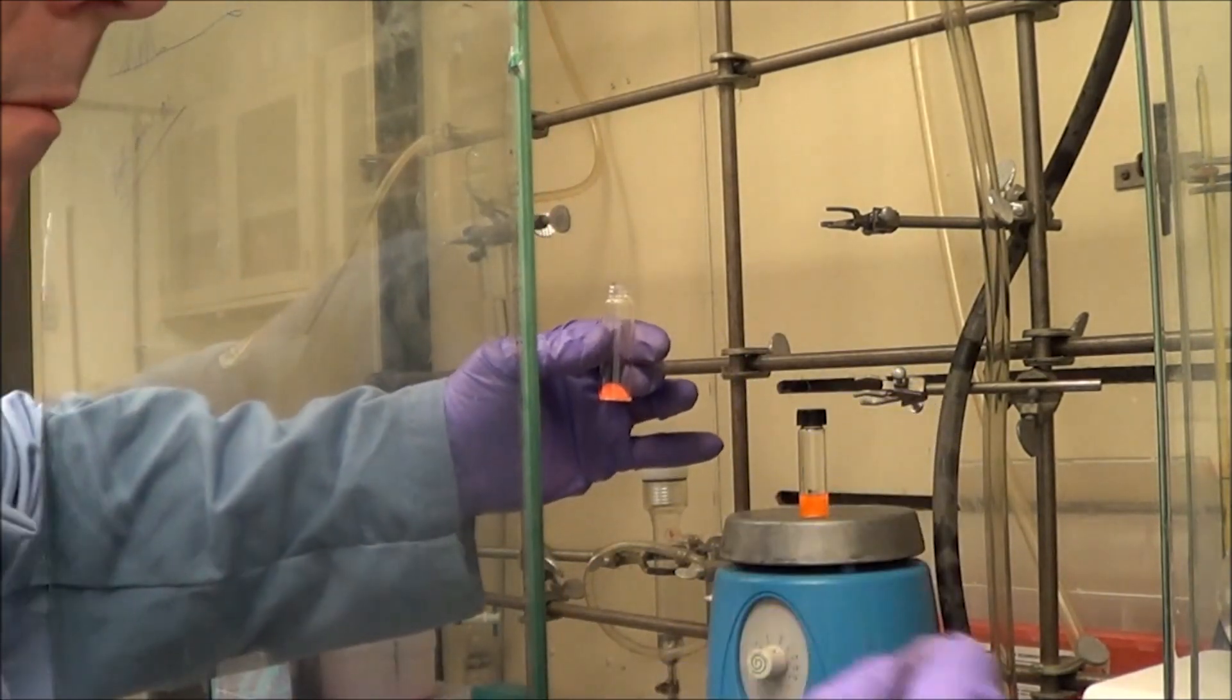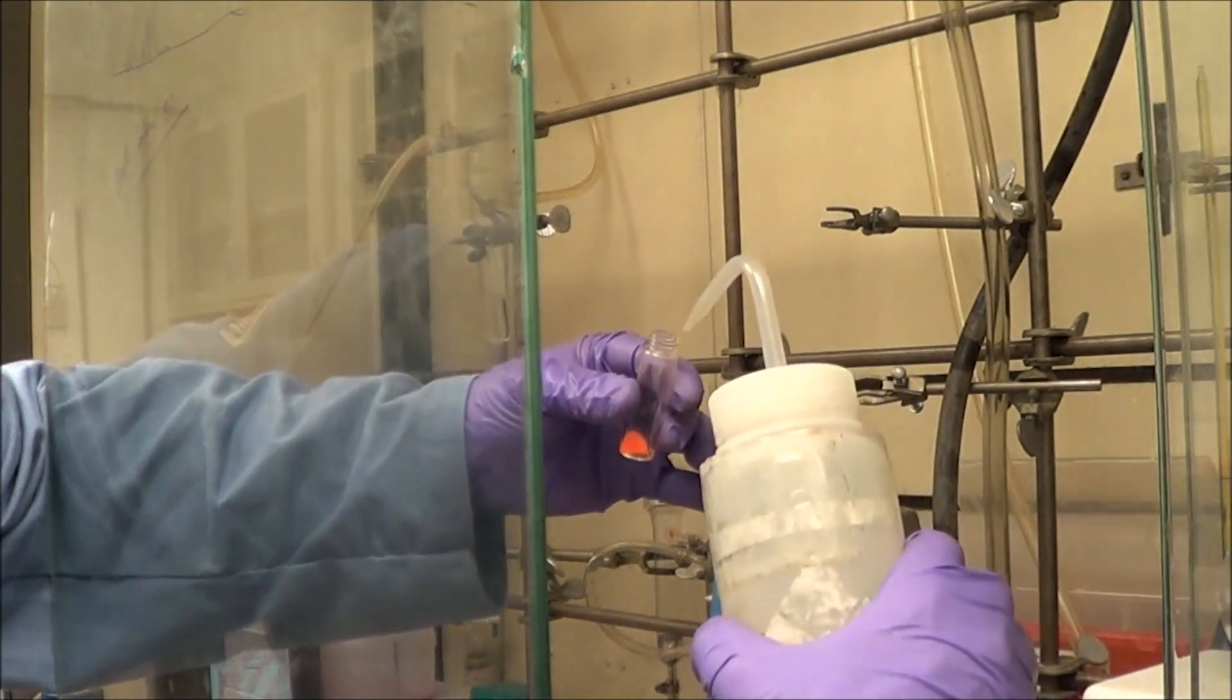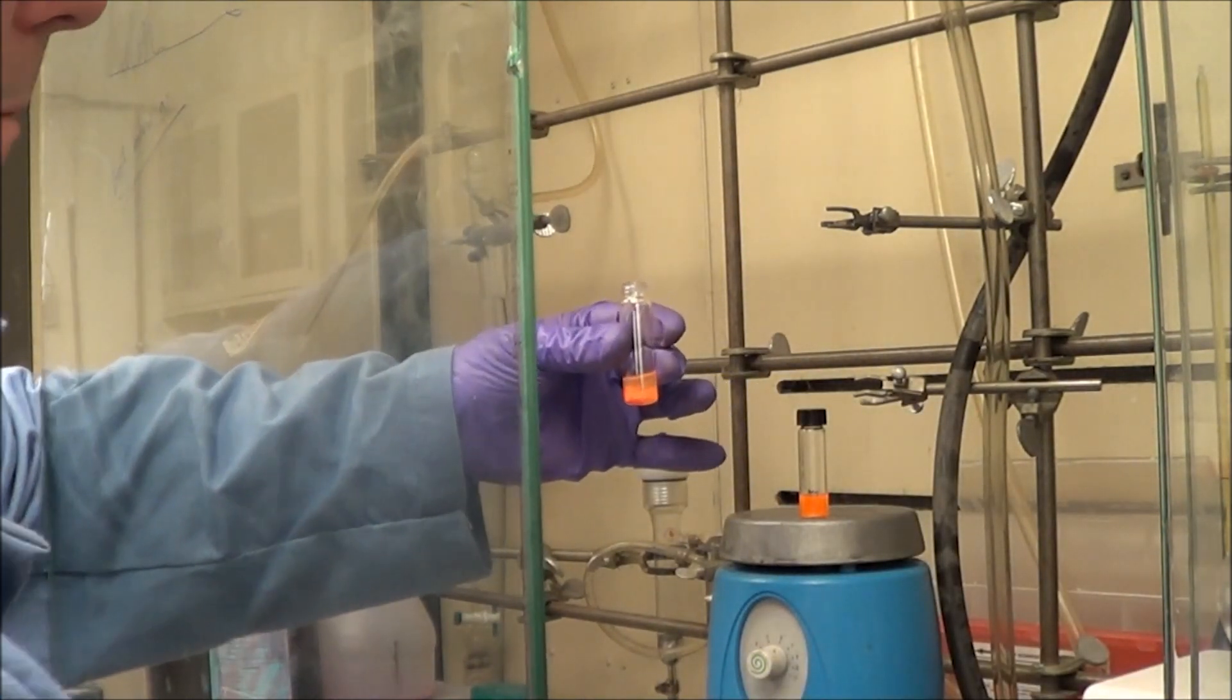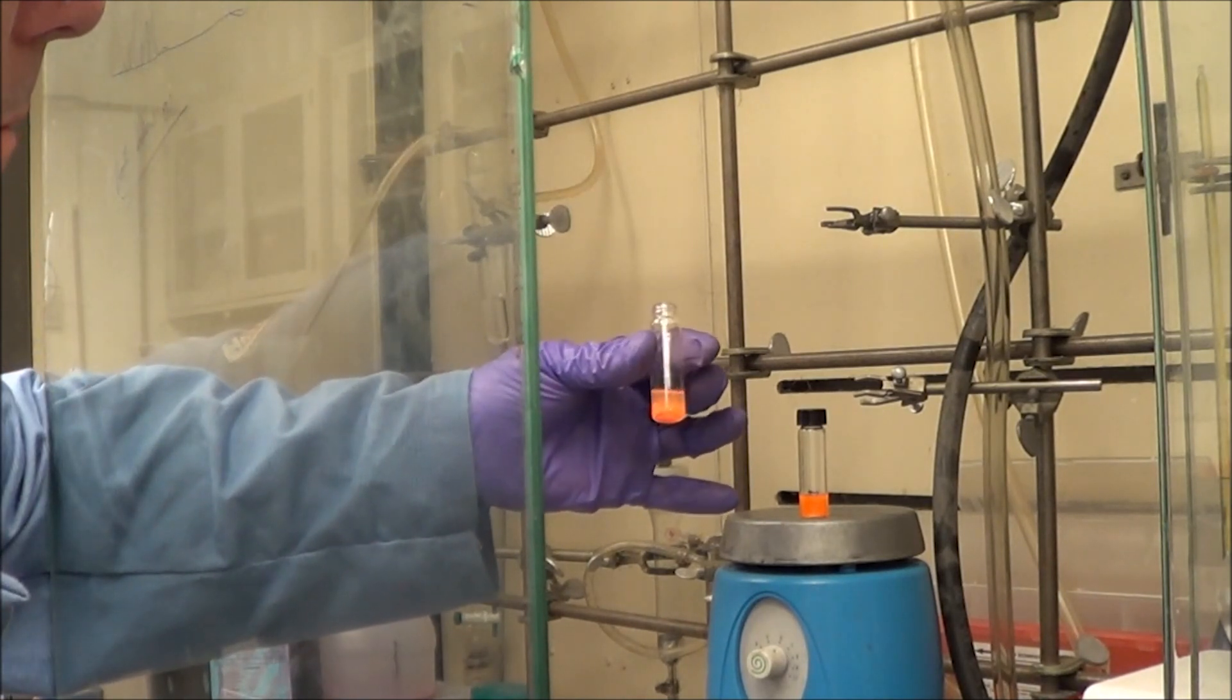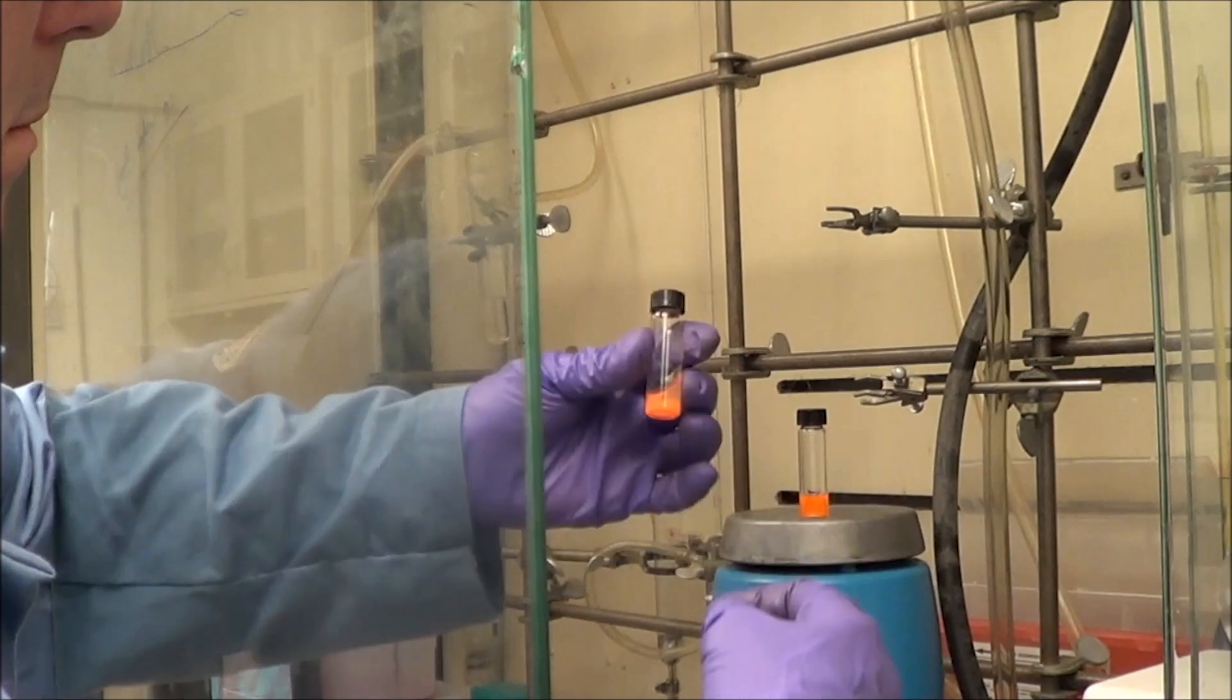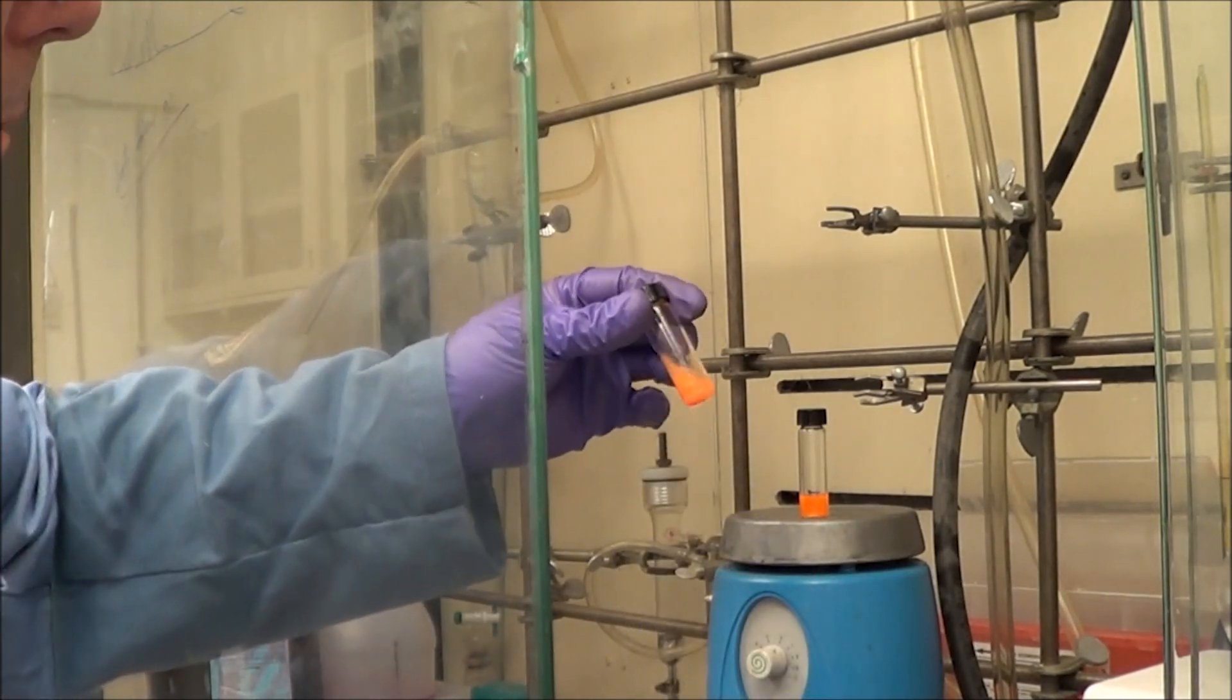The next thing we have to ask ourselves is how greedy are we? Because you see there's still a little bit of QDs left in that paste, and if I want to get them out, you can see I'm adding about another two mils of hexane. I'm going to repeat the process, shake the sample, break up the paste, centrifuge, and collect the hexane with dots in it.